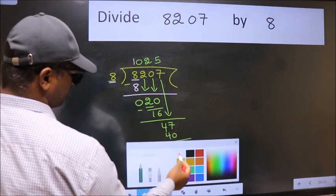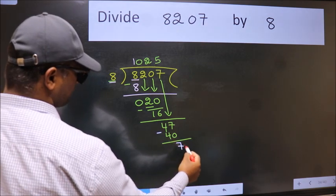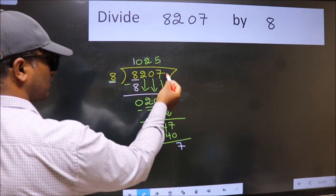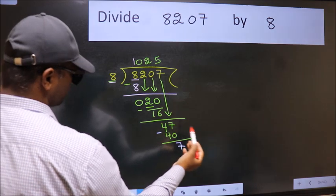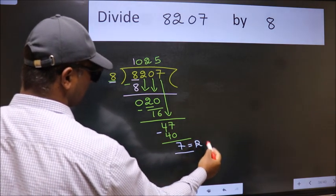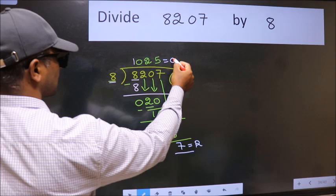Now, we subtract. We get 7. No more numbers to bring it down. So, we stop here. This is our remainder and this is our quotient.